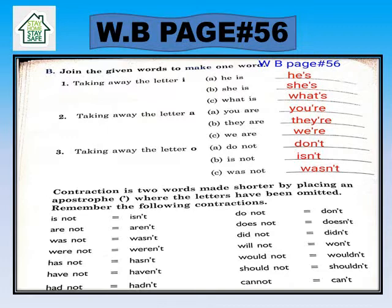What we have to do is make these two words into one word. For the first one, we take away the letter 'i'. We write 'he', put an apostrophe, and add 's' — so it becomes 'he's'. In the second one, the word is 'she' — again remove the 'i' and add apostrophe 's'. For the third one, 'what is' — remove the 'i' and write apostrophe 's'.